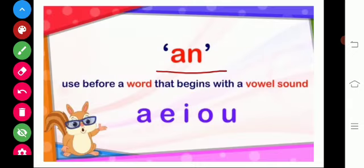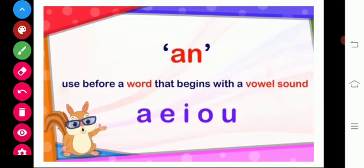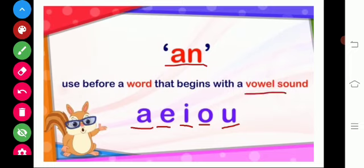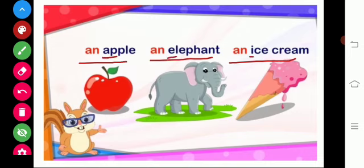And then AN is used before a word that begins with a vowel sound. Here we have five vowel letters — how many? Five. They are A, E, I, O, U. So we use AN before a word that begins with a vowel sound. Let's see some examples: an apple, an elephant, an ice cream. A, E, I are vowel letters, so we use AN in front of these words.